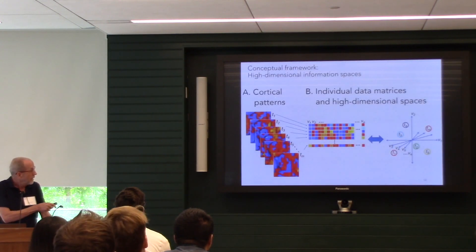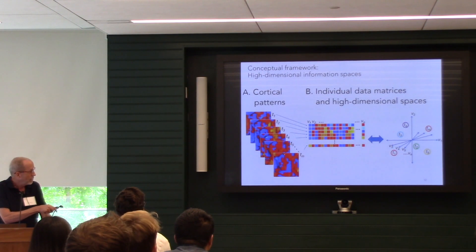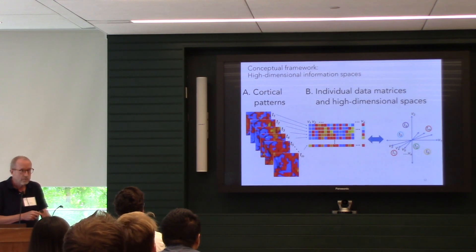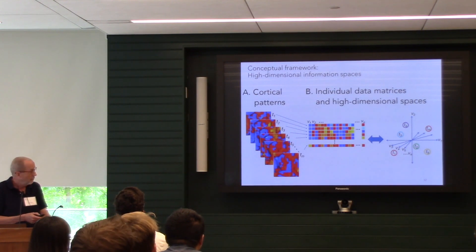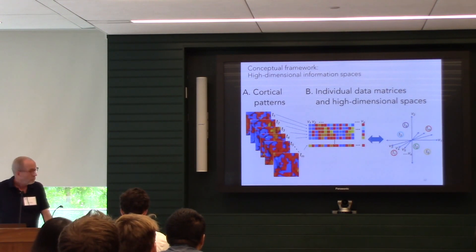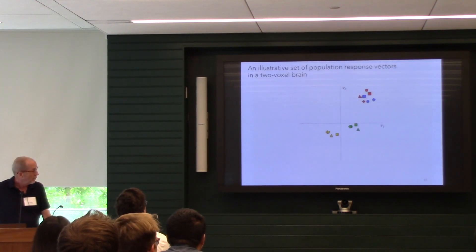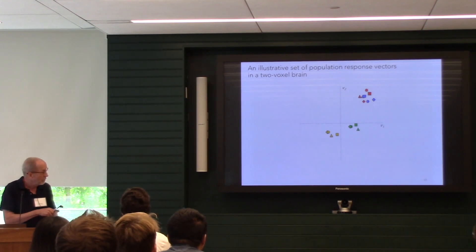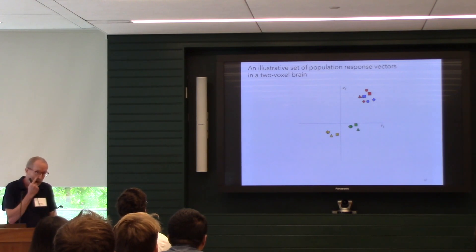We take the patterns of activity in a cortical patch and vectorize the voxels, then analyze that vector as a location in a high-dimensional space. If the cortical field has 200 cortical vertices, it's a 200-dimensional space. If we have a region of interest like ventral temporal cortex with 1,000 vertices, it's a 1,000-dimensional space. Luckily, linear algebra has no trouble scaling up to these very high-dimensional spaces.